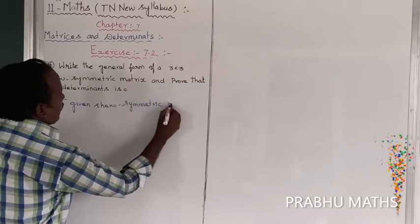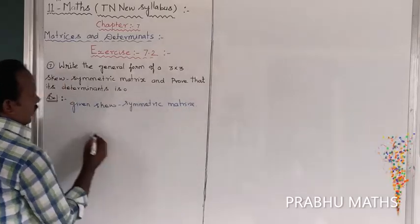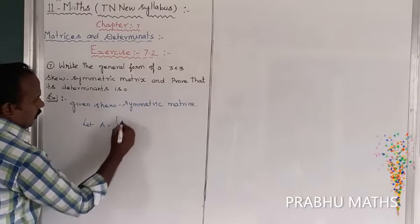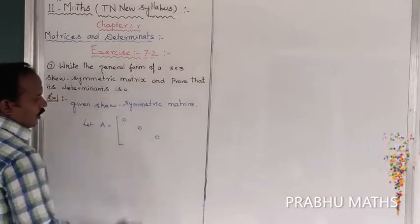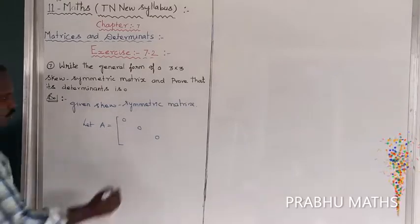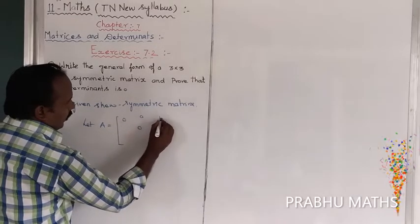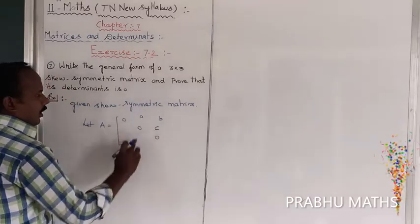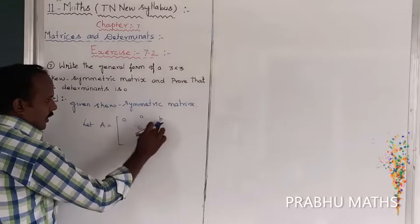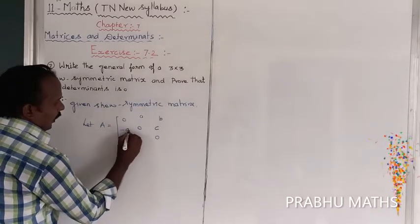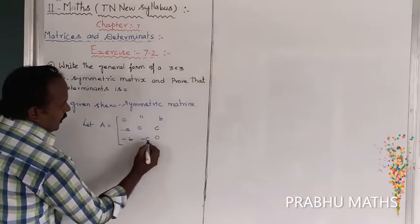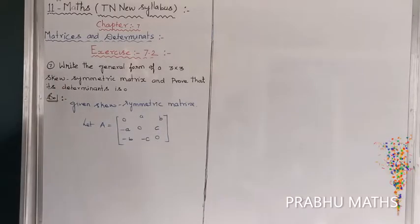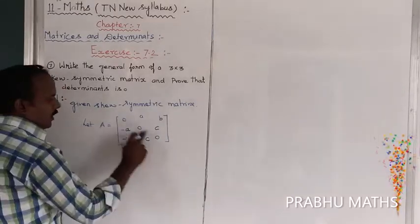Now let us consider the skew symmetric matrix. Let the values be A, B, C for the upper triangle. So the first diagonal is fully zero, and the upper triangle entries are A, B, C. The lower triangle has the same values but with opposite signs: minus A, minus B, minus C. That is the skew symmetric matrix.